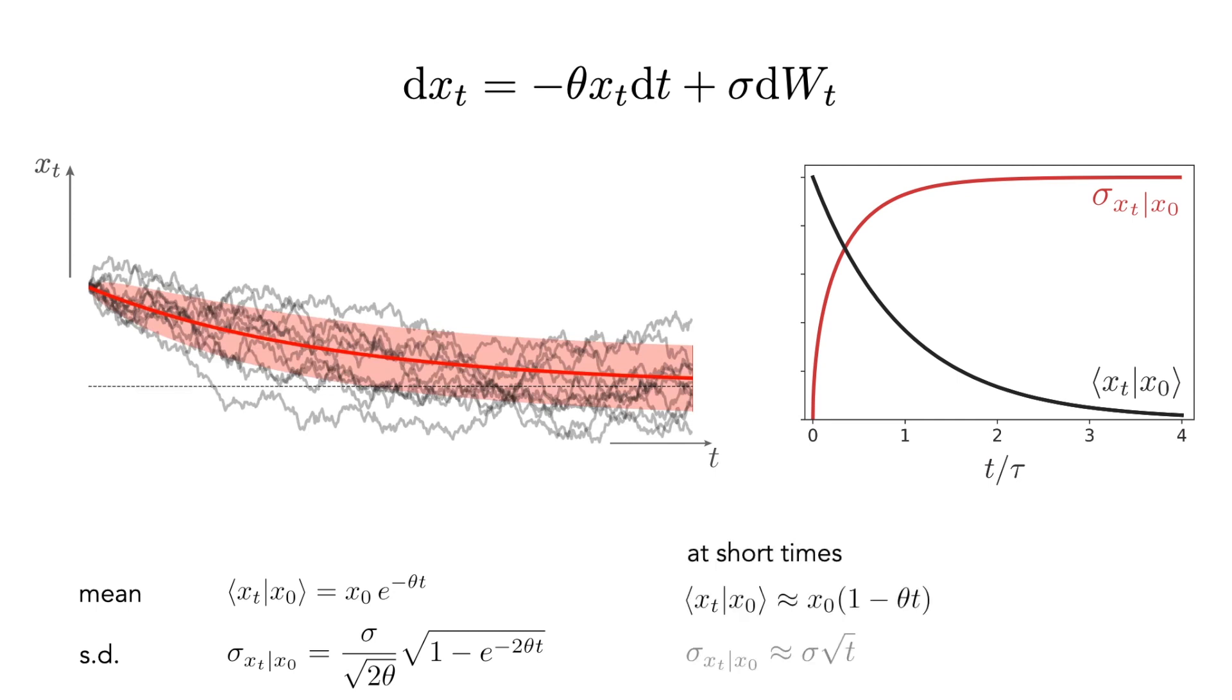At short times, the standard deviation is independent of theta and grows as the square root of time, characteristic of a pure diffusion process. Because of its square root dependence, the standard deviation exhibits a very fast initial growth and reaches 50 percent of its long time value in approximately one-seventh of the timescale tau.